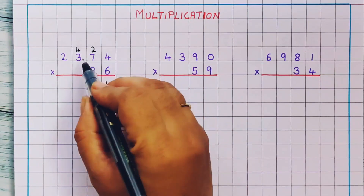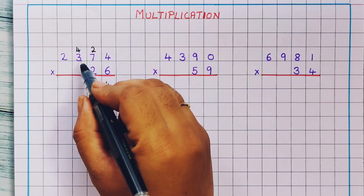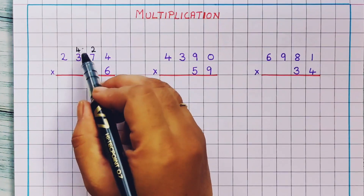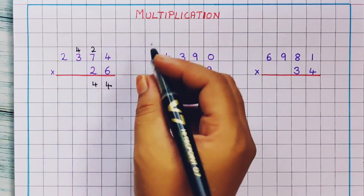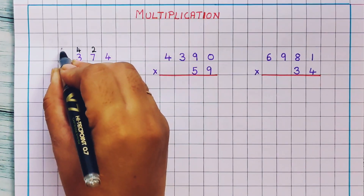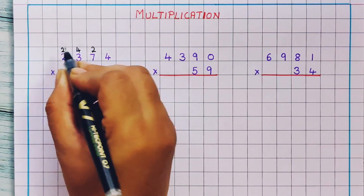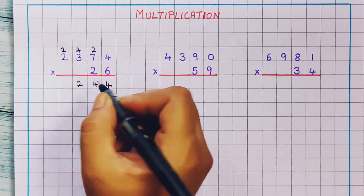Next, 6 3's are 18. 18 plus 4 is 22. So here I will write 2 and 2 — 22.